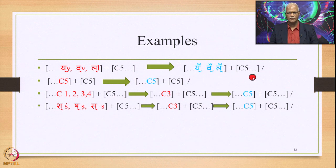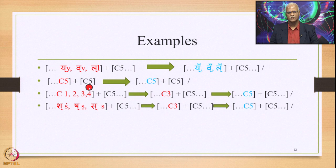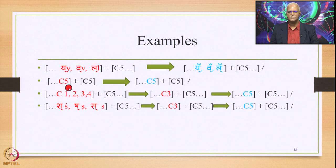The output generated is the nasal variety of Y, V, and L plus C5, and this is generated optionally. So Y, V, and L plus C5 would be the other optional output. Then we have C5 plus C5 — a peculiar case — where C5 is replaced once again by C5. In a way the output is the same as input, but technically the output is different: C5 in the output is the substitute.